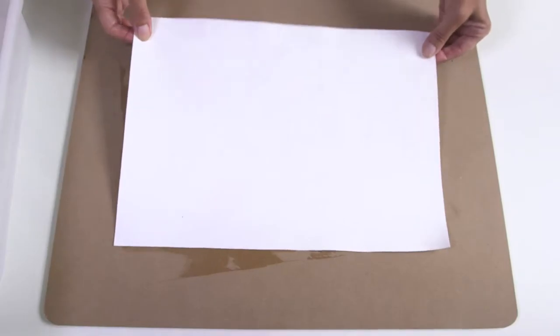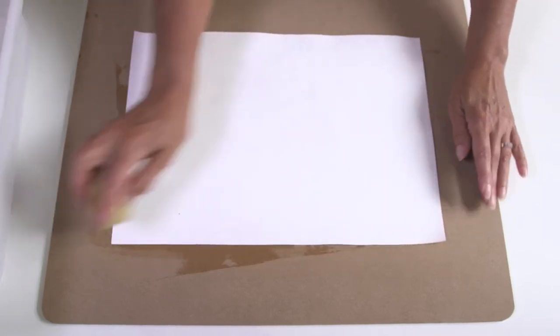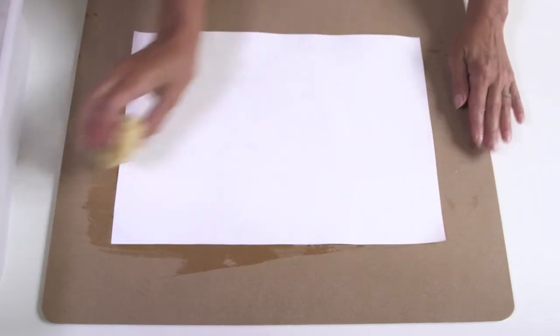Lift the paper and shake off the excess water. Place on a flat drawing board and smooth the wet paper out with a clean sponge without creasing it.